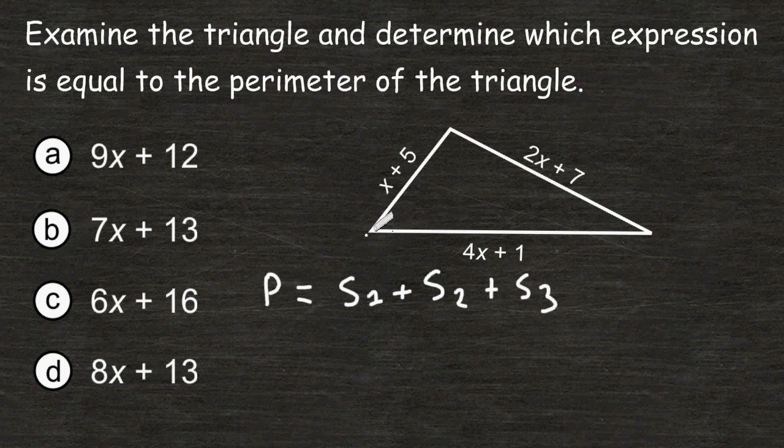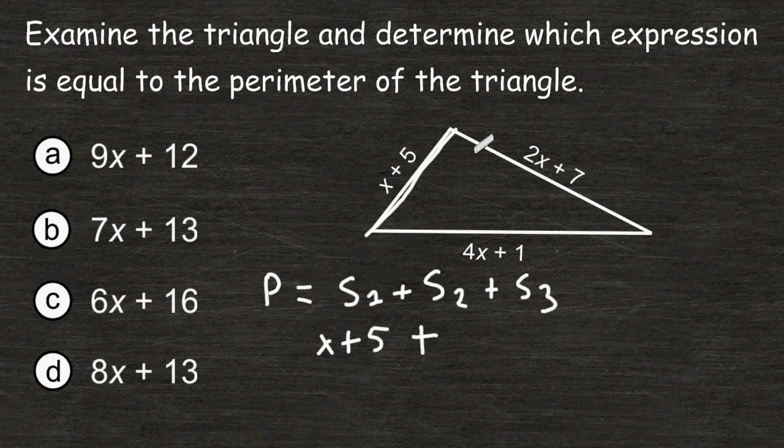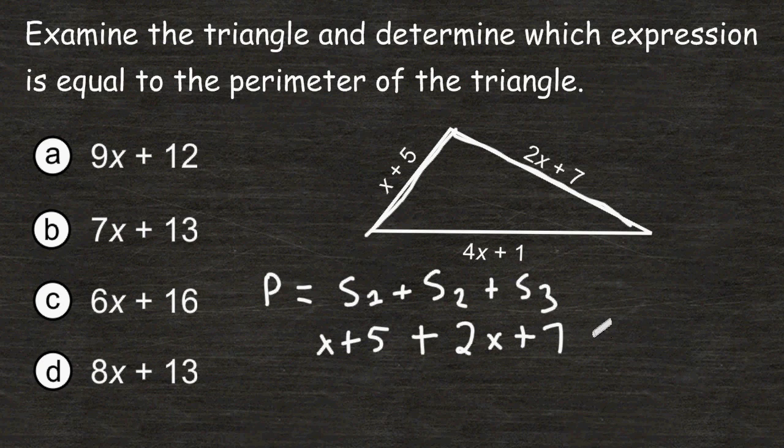Let's start with this side right here. The length of this side is x plus 5. And we are going to add that to the length of side 2, and that distance is 2x plus 7, and we are going to add that to the length of side 3, which is 4x plus 1.